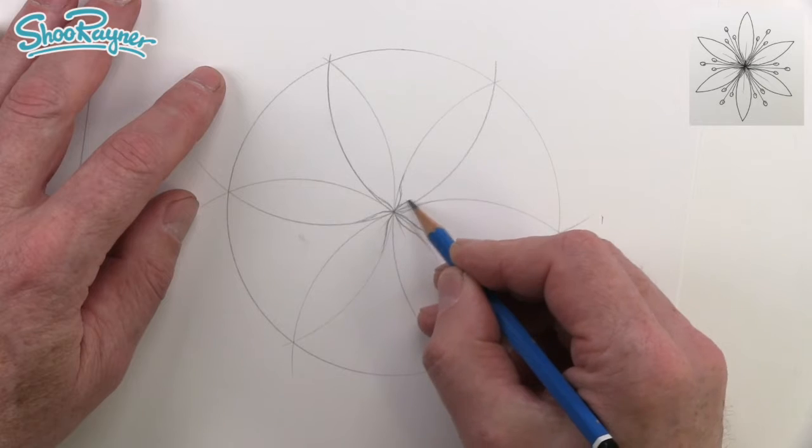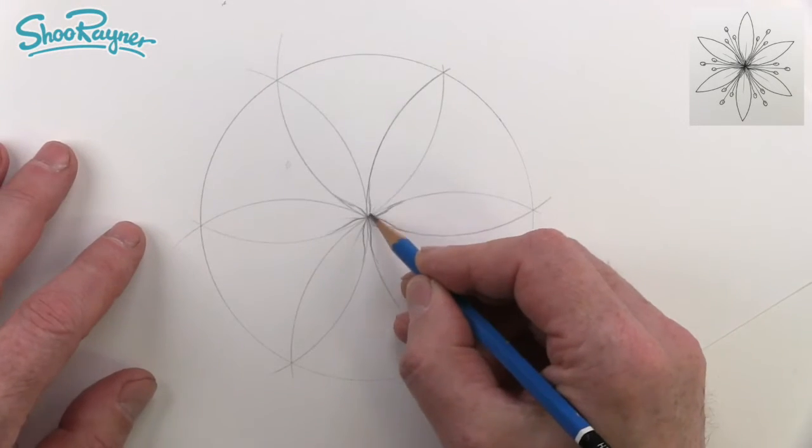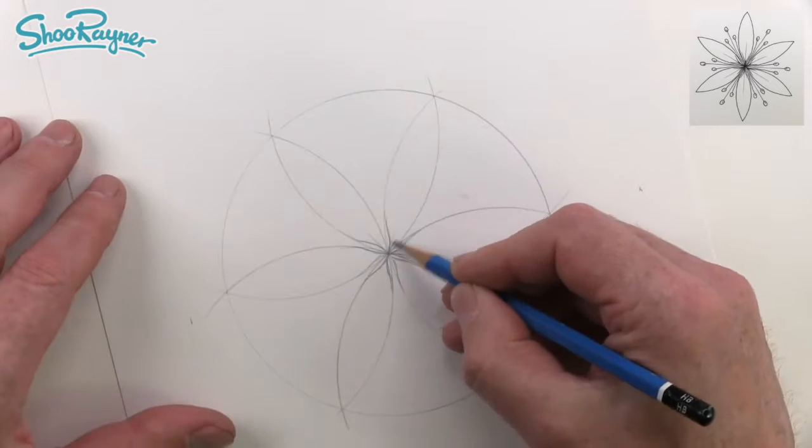So we've got coming out and then into an S. That's a bit harsh that one isn't it? Out and into it, sort of an S shape.